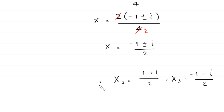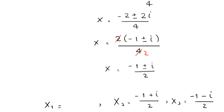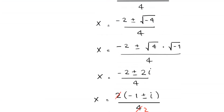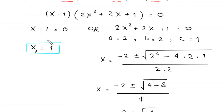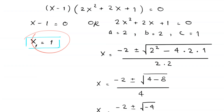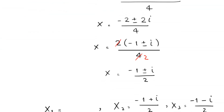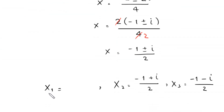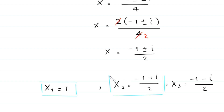So we have three solutions for this equation: x₁ = 1, x₂ = (-1 + i)/2, and x₃ = (-1 - i)/2.